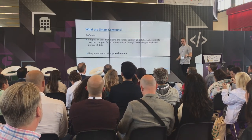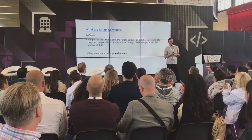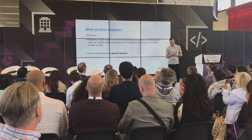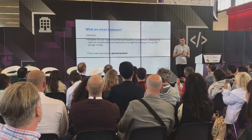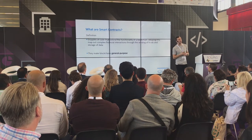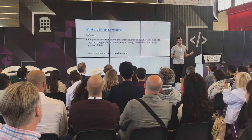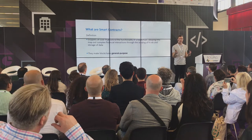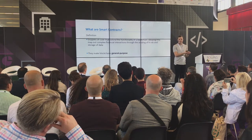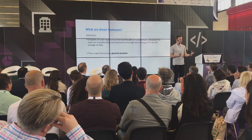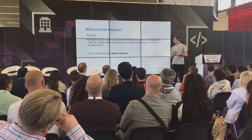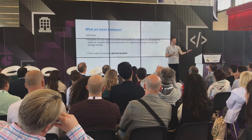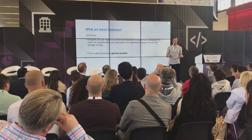This is where smart contracts come in. Formally defined, smart contracts are snippets of code that extend the functionality of the blockchain, allowing it to map out complex financial interactions through the sending of funds and the storage of data. For our auctioning example, anyone could build out some auction-related smart contracts, deploy them to one single blockchain, and that single blockchain now has more functionality. They kind of make blockchains general purpose and relieve the need for all these different blockchains for different use cases.